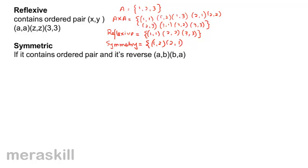So (1,2) and (2,1), (1,3) and (3,1), (2,3) and (3,2) — all of these share a relationship of symmetry, meaning if a relation contains an ordered pair, it also contains its reverse.